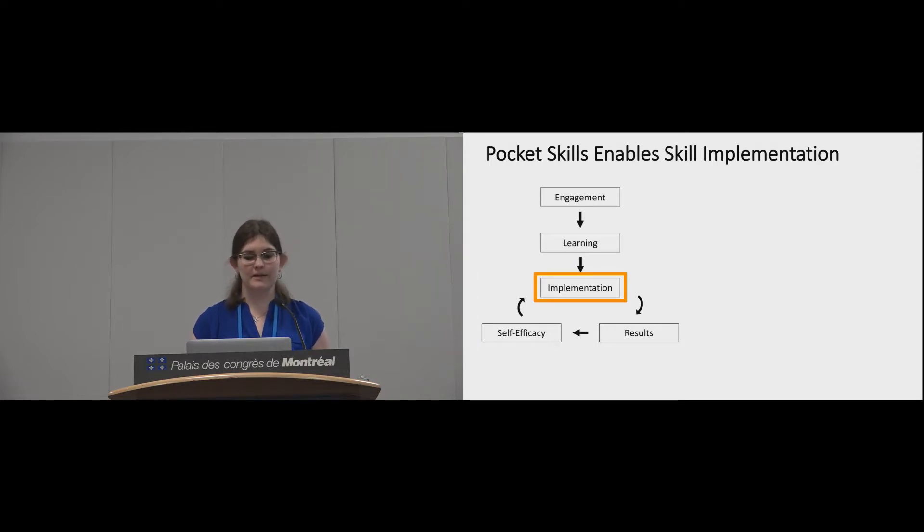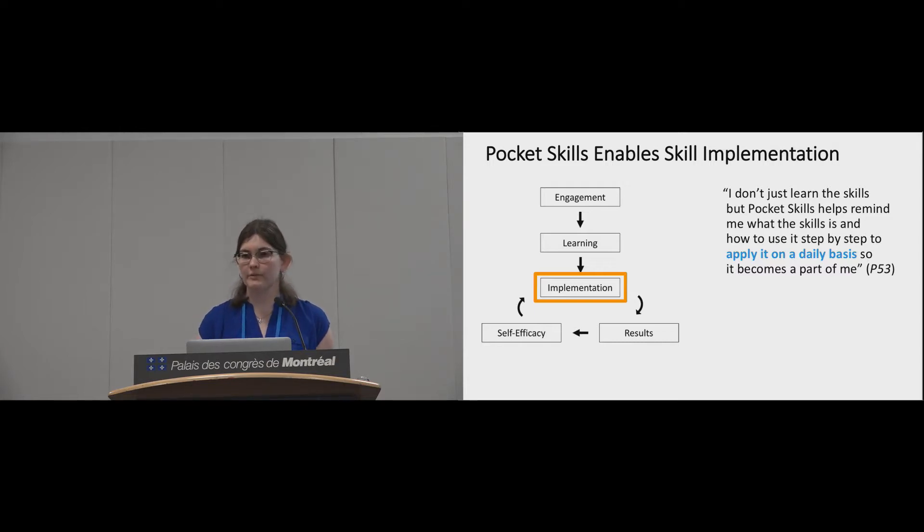Successful DBT requires people to not just learn and practice skills, but to also implement them in their lives when they need them instead of choosing a negative coping mechanism. Participants reported that PocketSkills helped them bridge this gap between practicing and implementation. One participant explained, I don't just learn the skills, but PocketSkills helps remind me what the skill is and how to use it step by step to apply it on a daily basis so it becomes a part of me. So this participant felt that PocketSkills helped her better incorporate her DBT skills in her life.